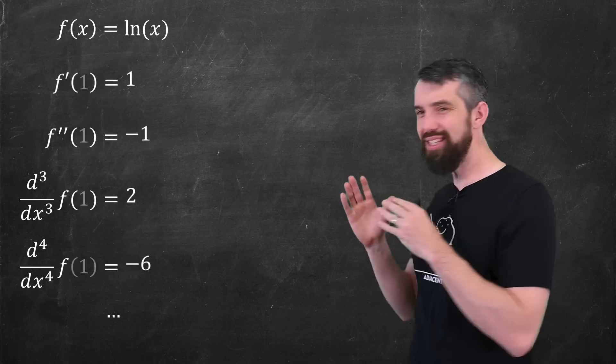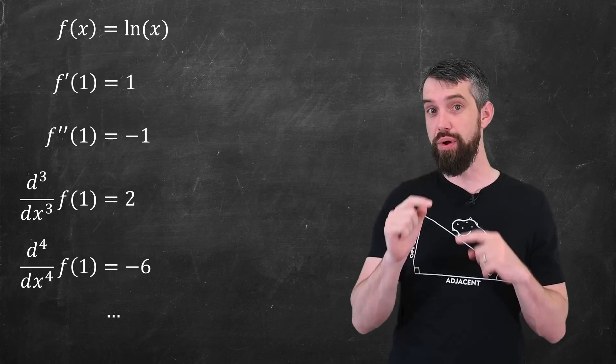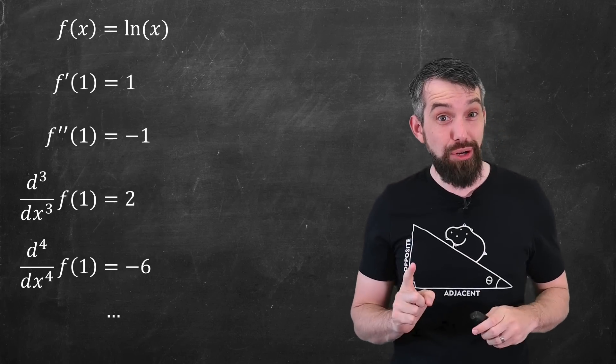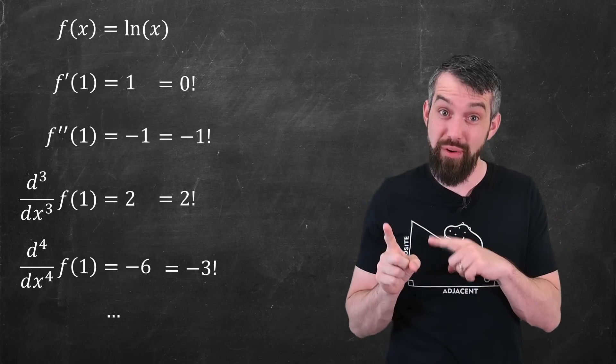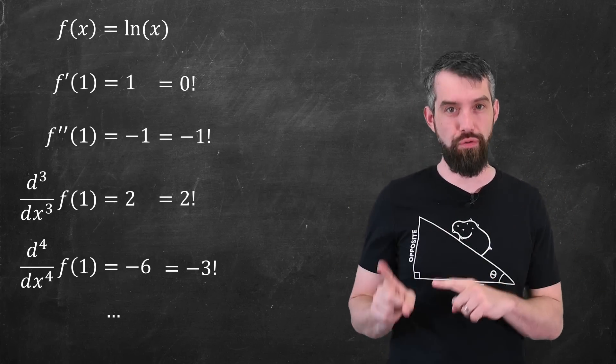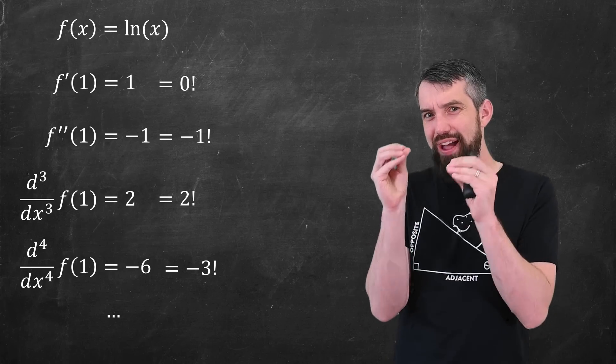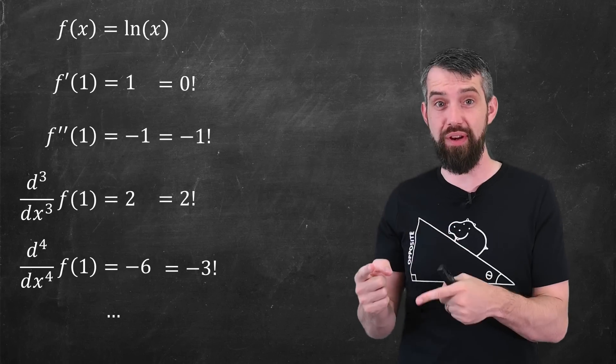I notice, first of all, positive, negative, positive, negative, going all the way down. Then I also notice I can write these in terms of factorial. It's for the first derivative, 0 factorial. For the second derivative, 1 factorial, third derivative, 2 factorial, and so forth. And so basically, it's like a factorial, but with one index beneath the number of derivatives.